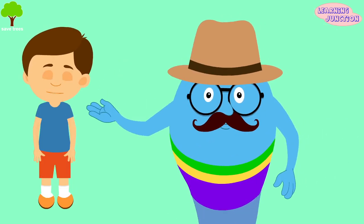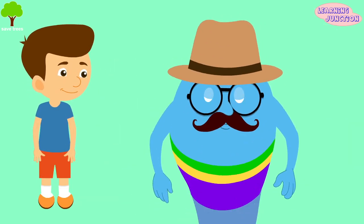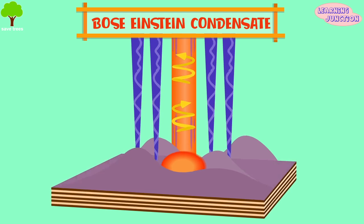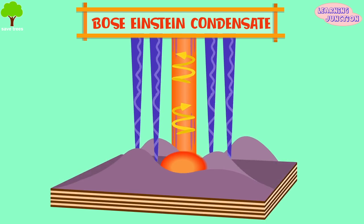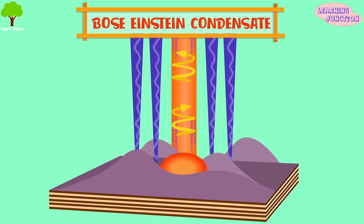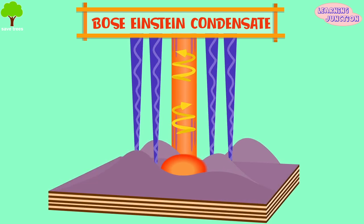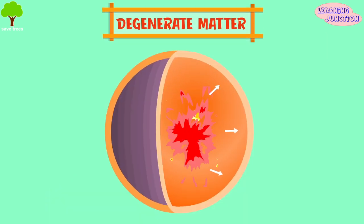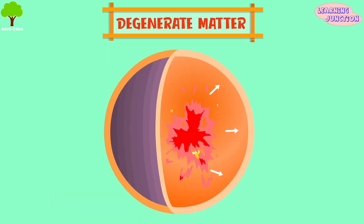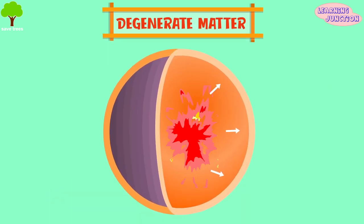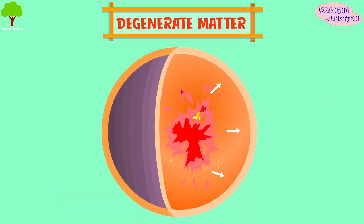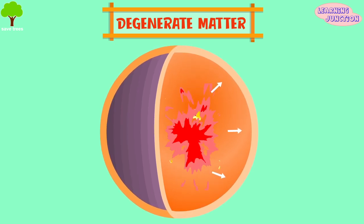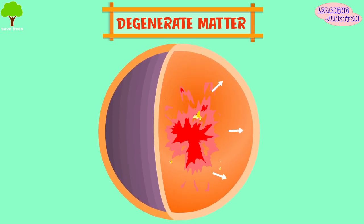Some other states of matter include Bose-Einstein condensate, which is a state of matter that occurs very, very close to absolute zero, and degenerate matter, which is the supremely compressed state of matter that often exists in the cores of massive stars.